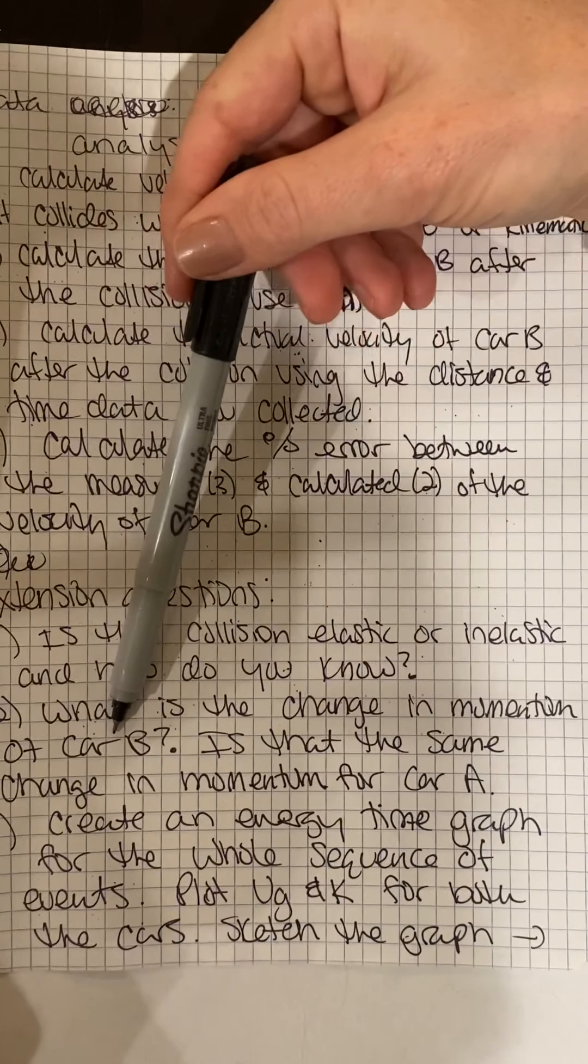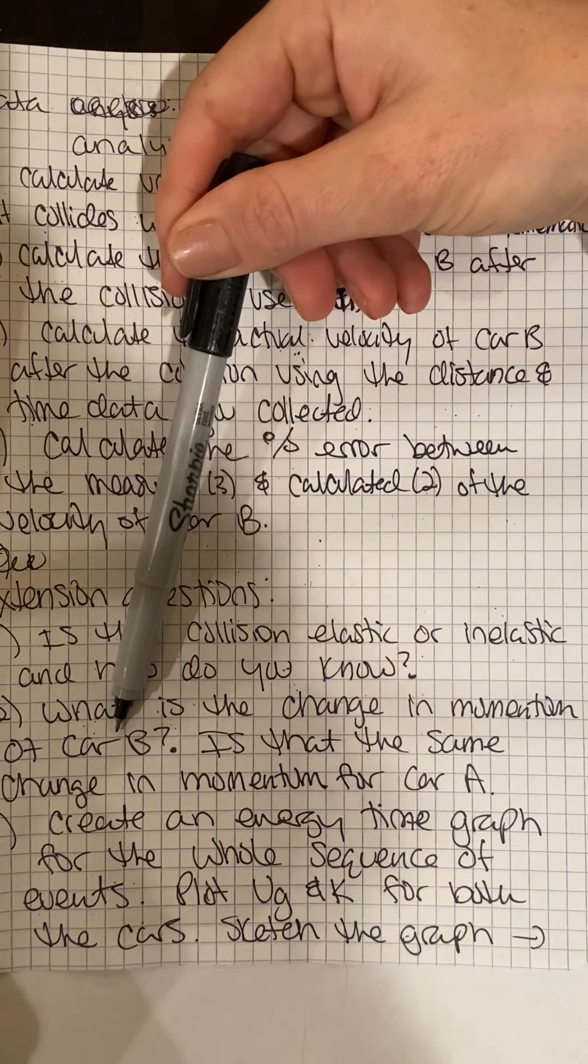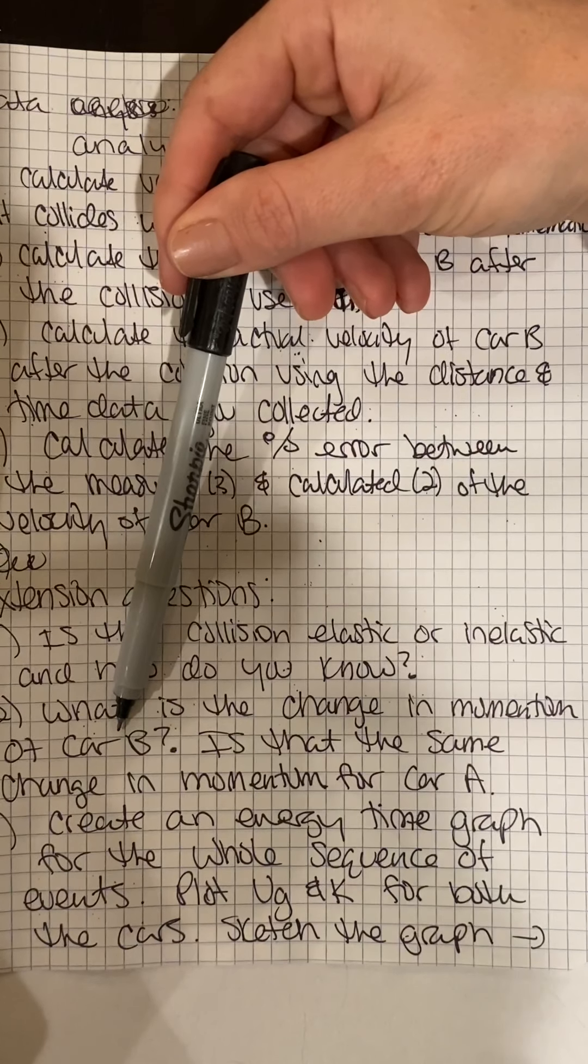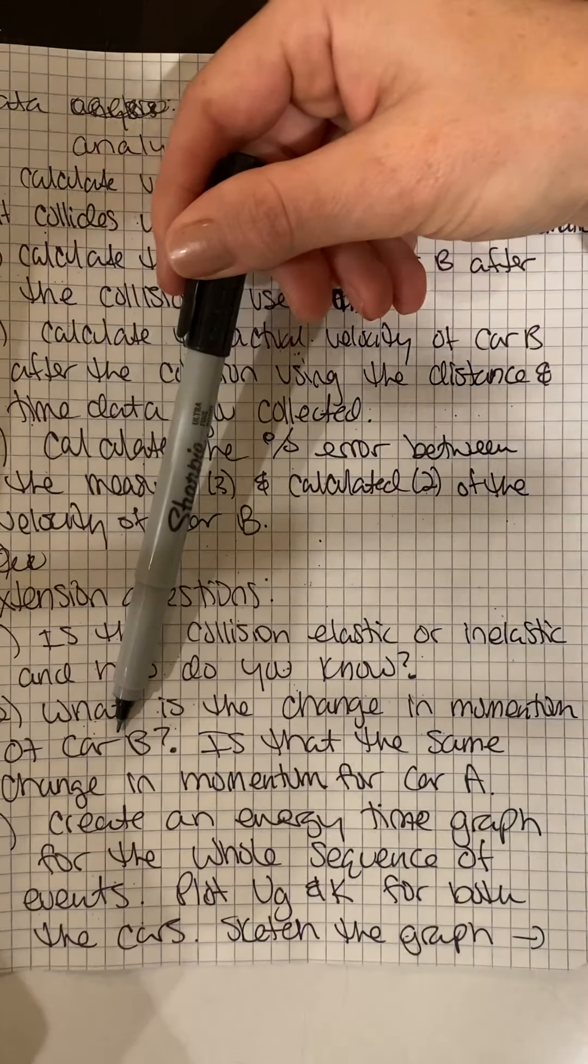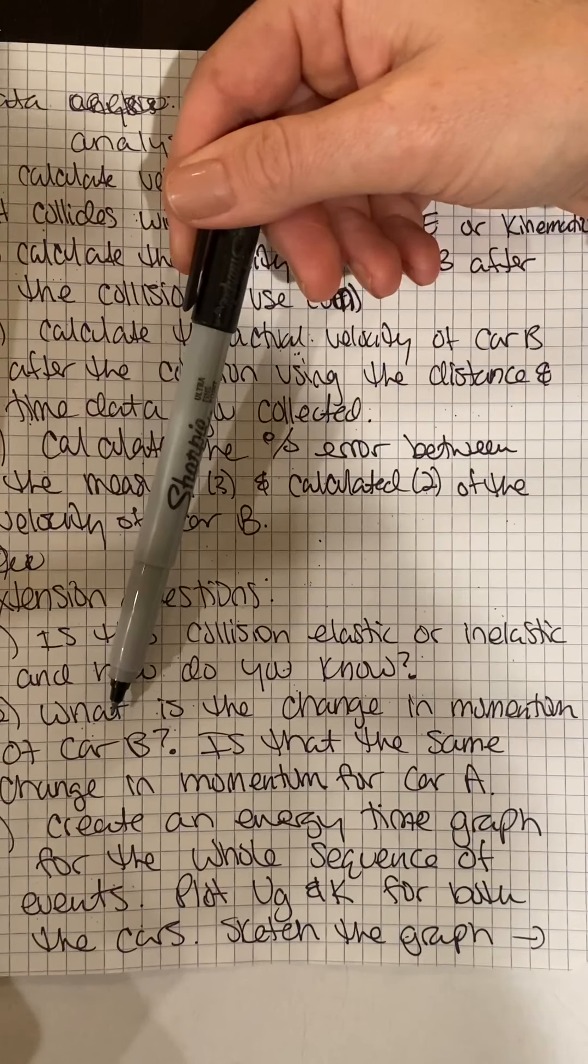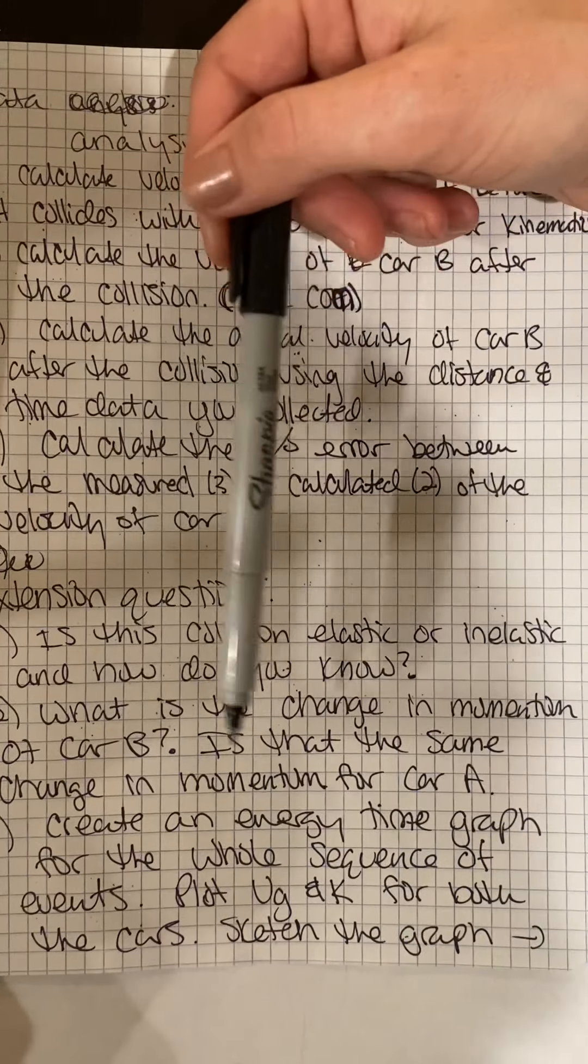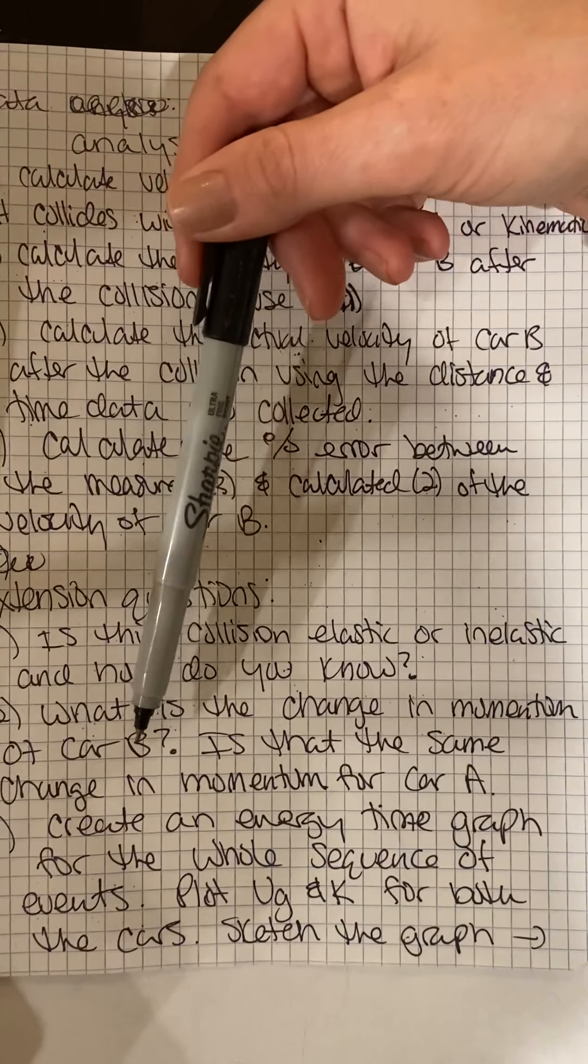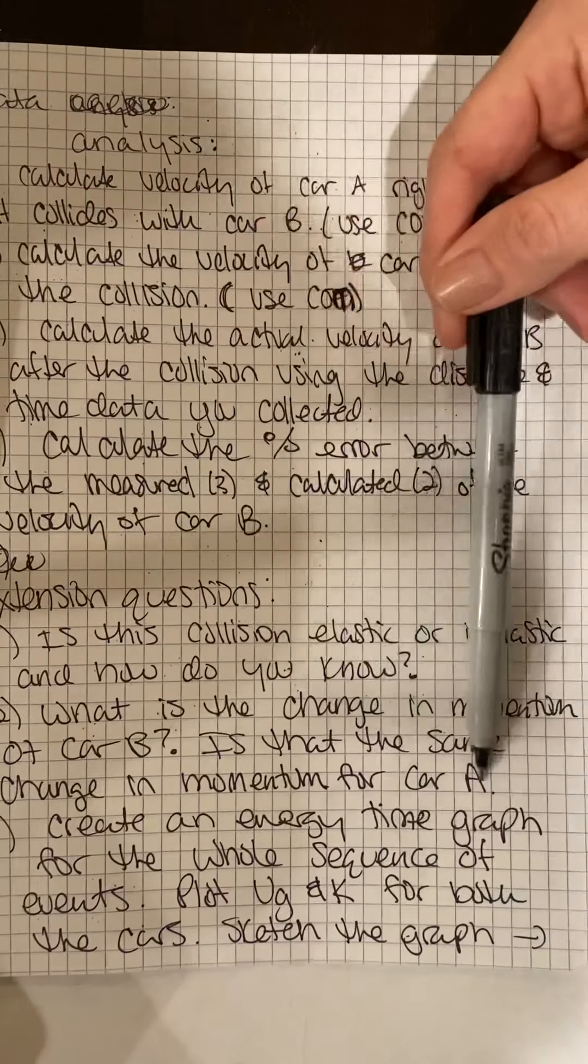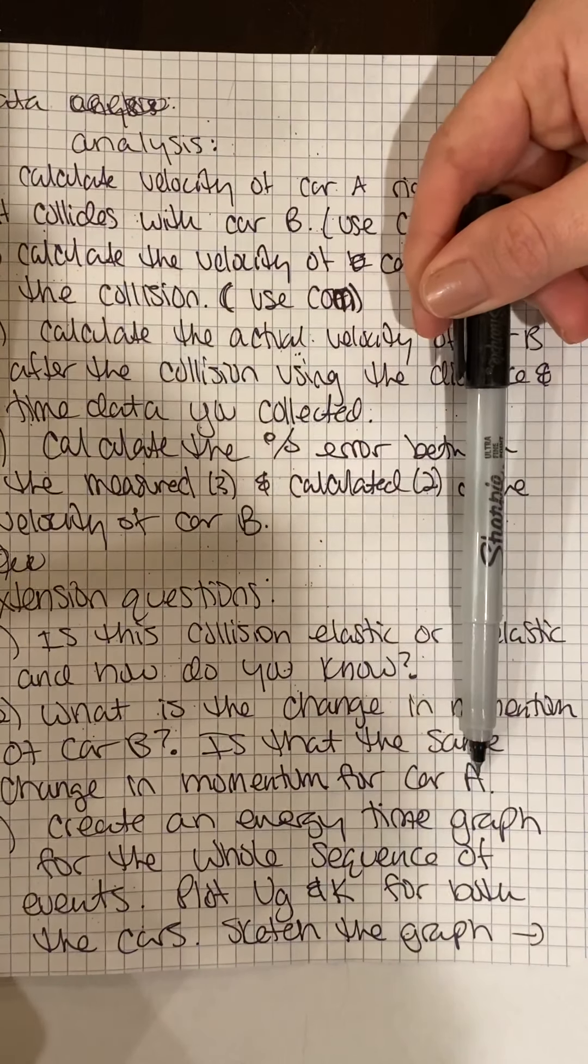What is the change in momentum for car B? Even though our momentum is conserved for the system as a whole, because there's no external forces exerted on the system, the individual cars within our system both have a change in momentum. So what is that change in momentum for car B? Is it the same as the change in momentum for car A?